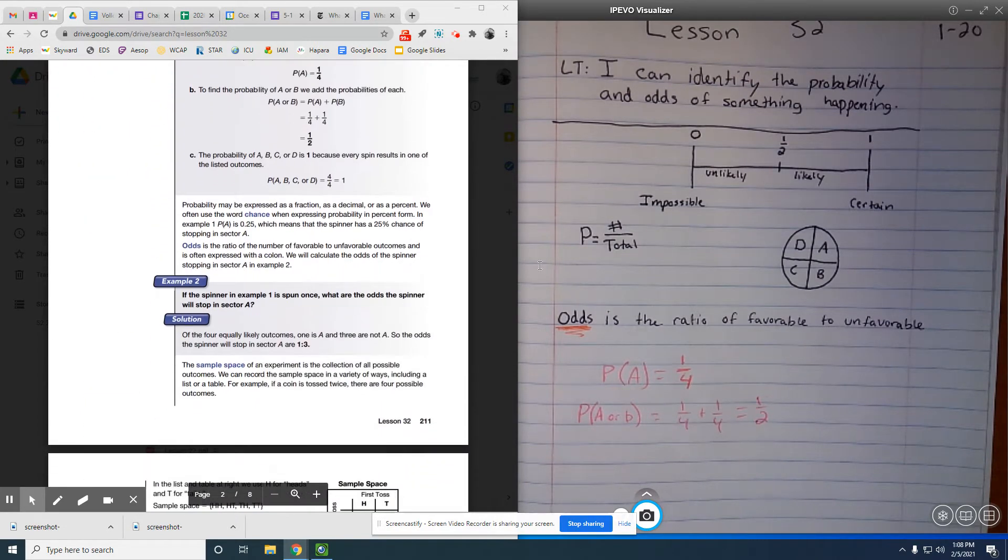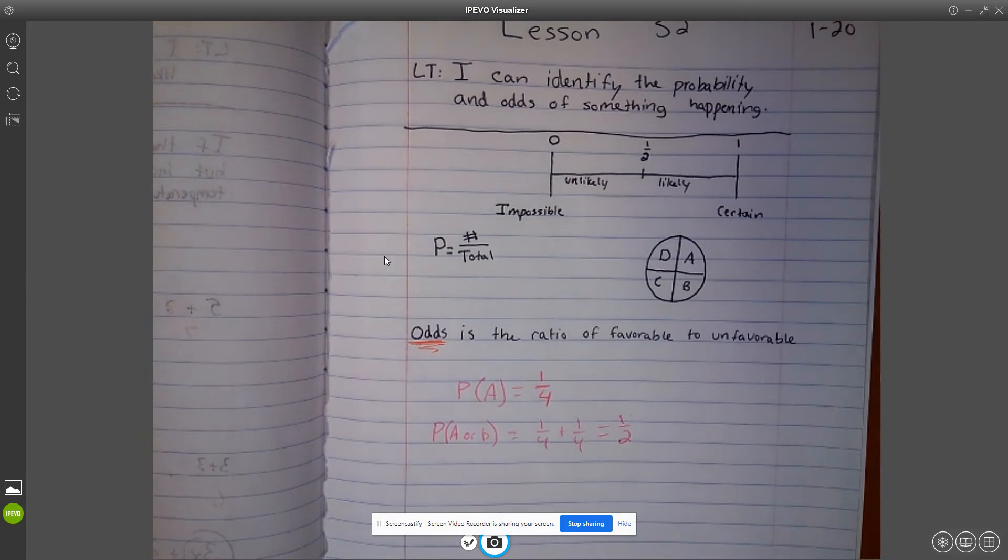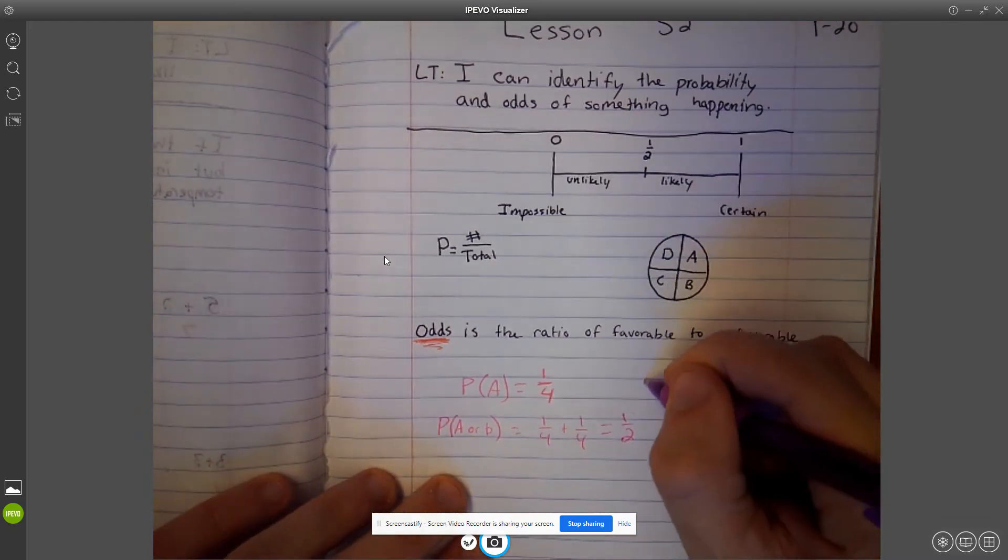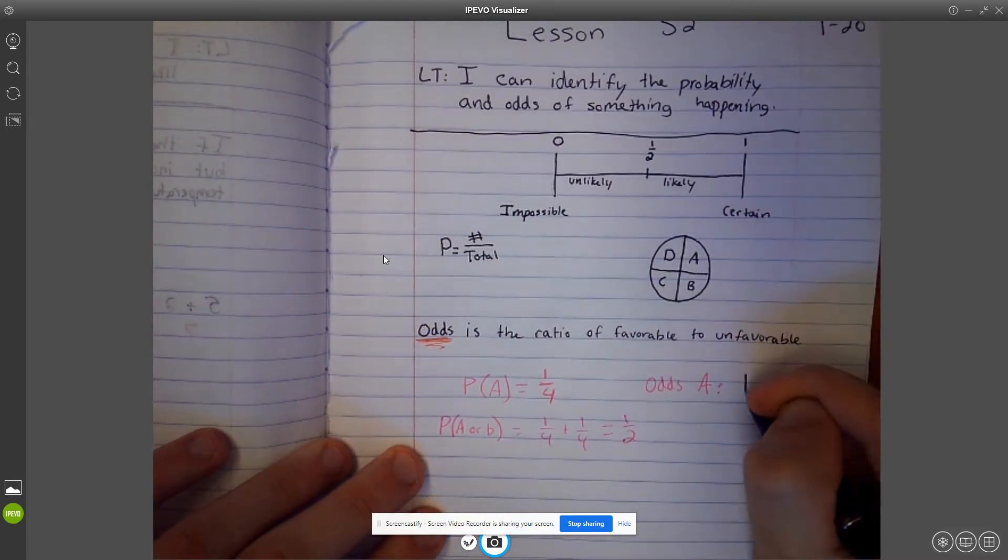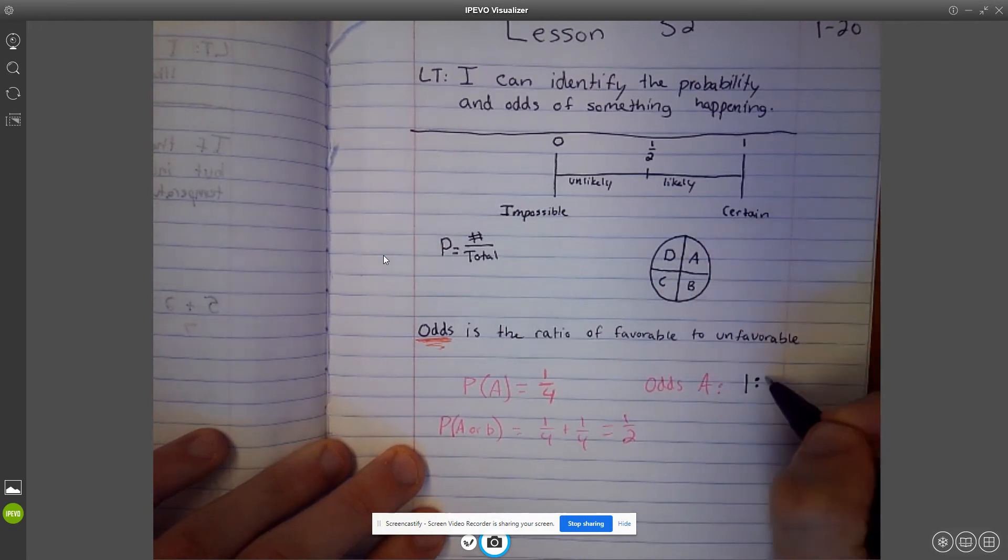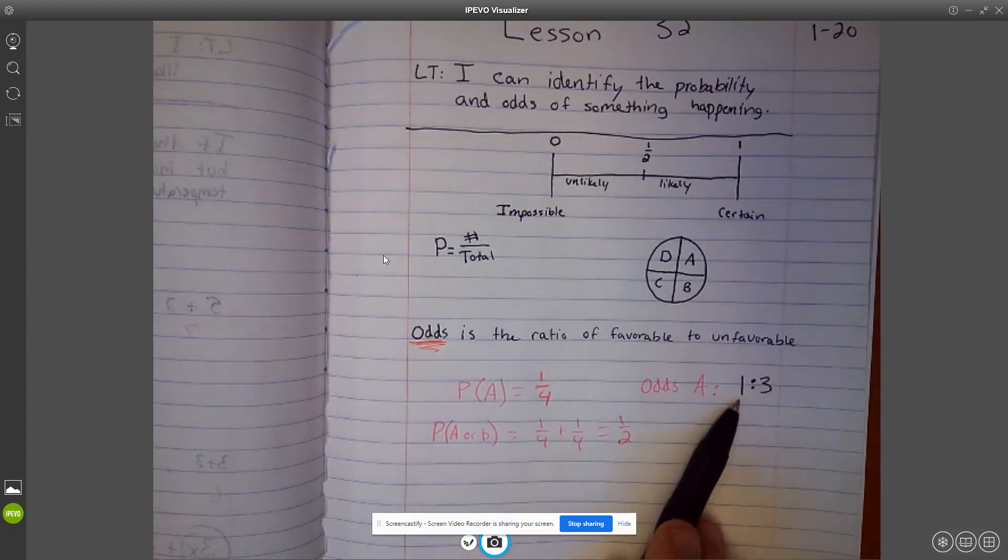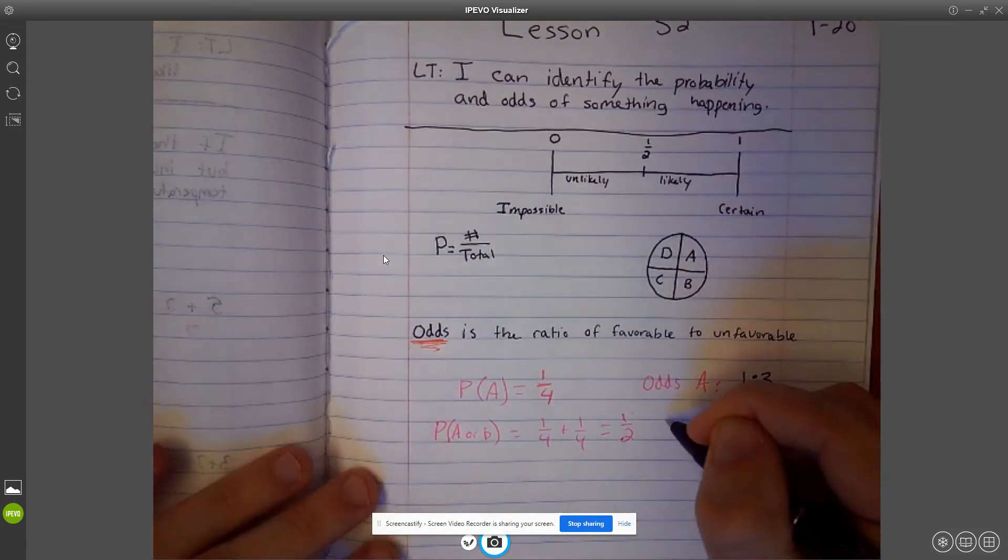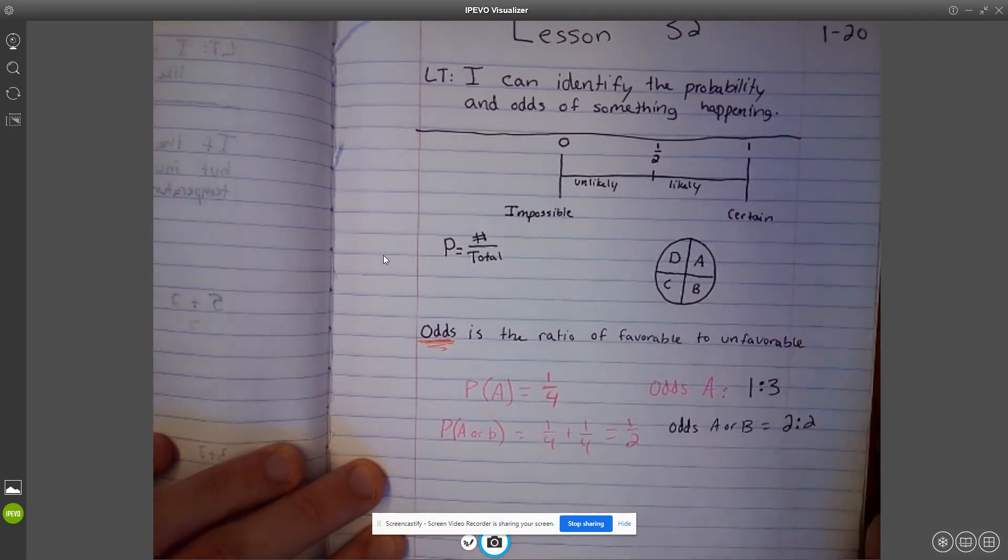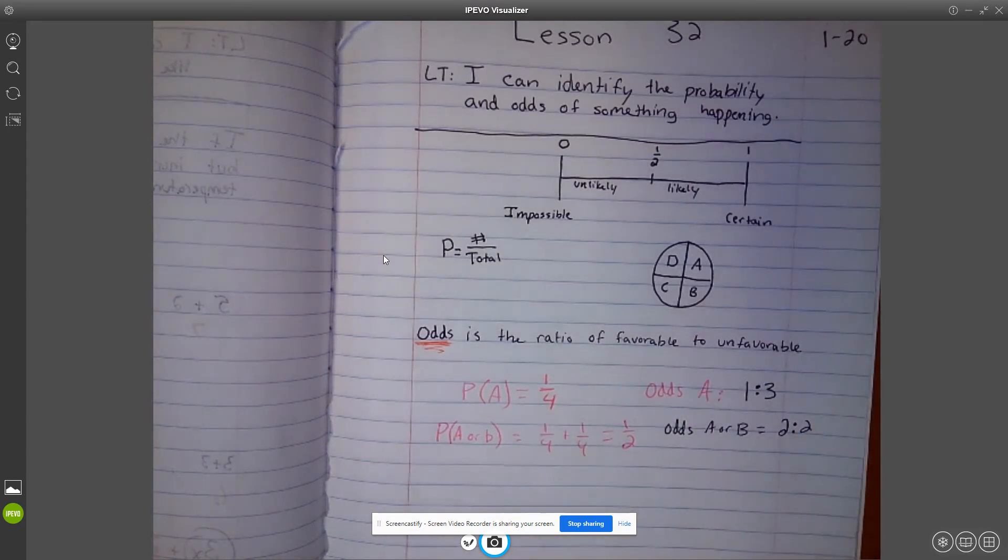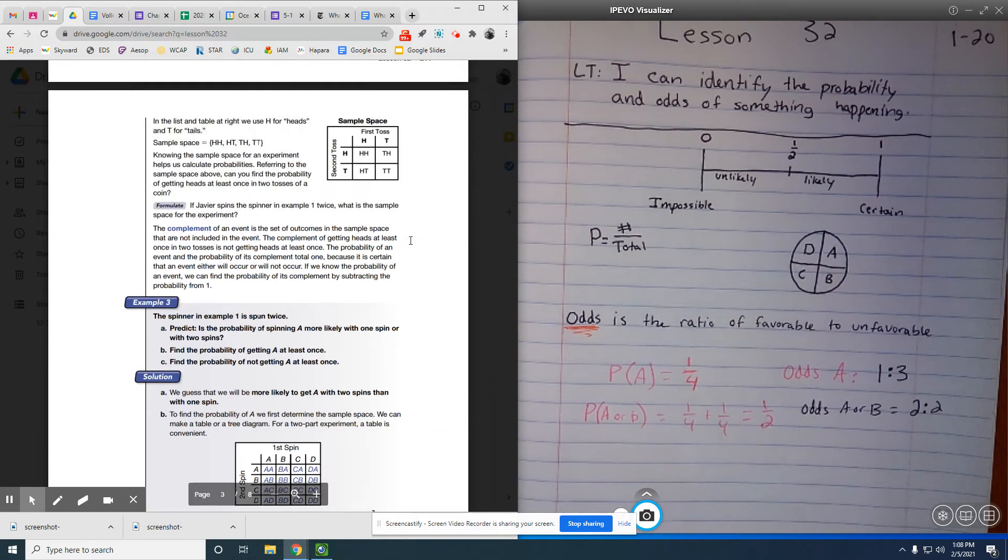Another thing we're going to be talking about is odds. Odds is very similar to probability, but it's the ratio of favorable to unfavorable. So if I asked you, what would be the odds that you're going to land on A for that spinner? Well, that would be 1, because there's 1 A, to 1, 2, 3, because there's 3 other options. So again, odds does not include the total. It includes what you want to what you don't want. So the odds of landing on A or B would be 2 to 2, because there's 2 for A and B, and there's 2 unlikely. So again, odds is a little bit different. We're really focused on that probability. Let me see if I can find another example.